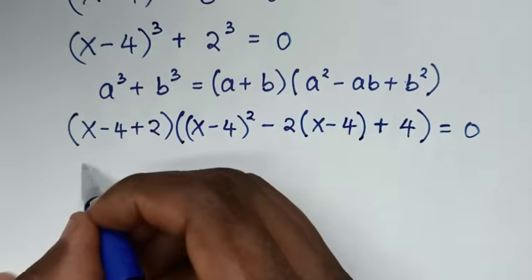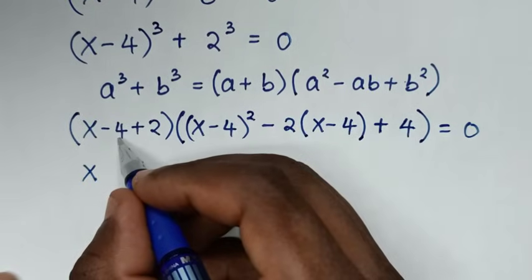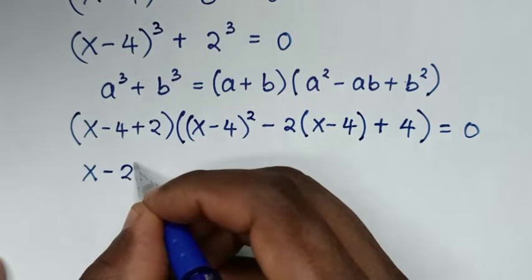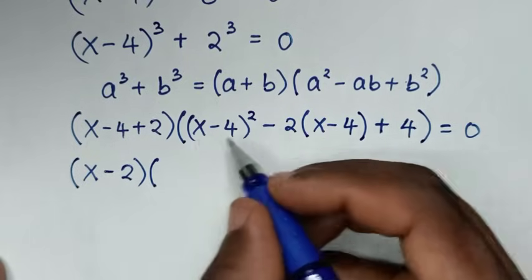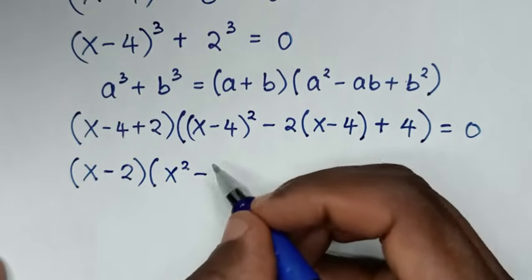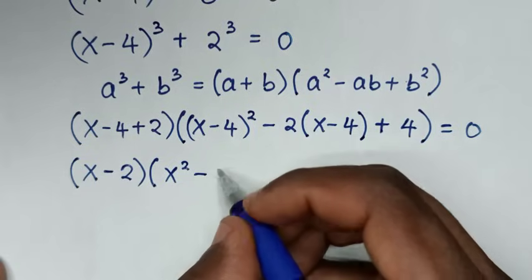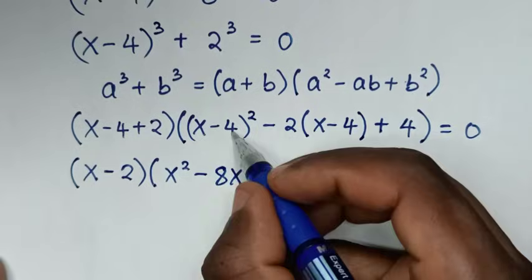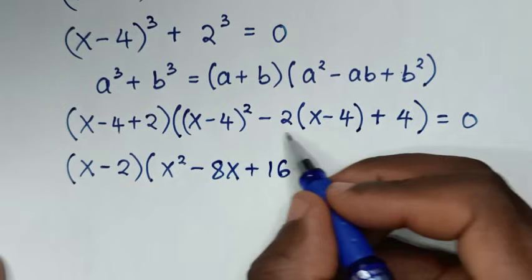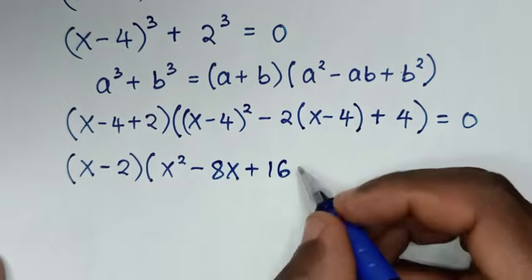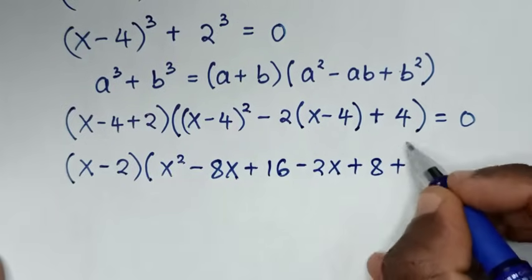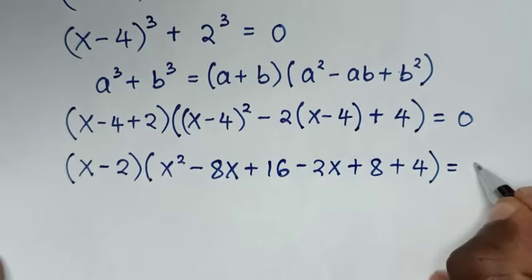Simplifying: -4 + 2 = -2, so the first factor is (x - 2). Expanding (x - 4)²: x·x = x², and -2·(x)·4 = -8x, and 4·4 = +16. Opening the bracket with -2 gives: -2x and -2·(-4) = +8.